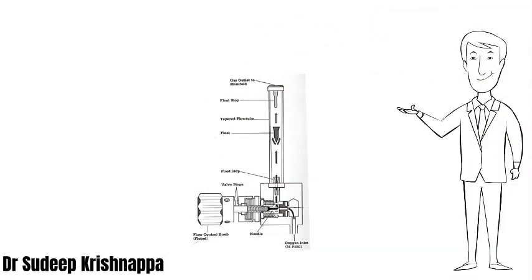Conventional flow meters, be they the manual ones as indicated in the diagram here or digital ones, are present on the workstations. We have dealt with and understood how these flow meters function in one of the earlier doodlies.